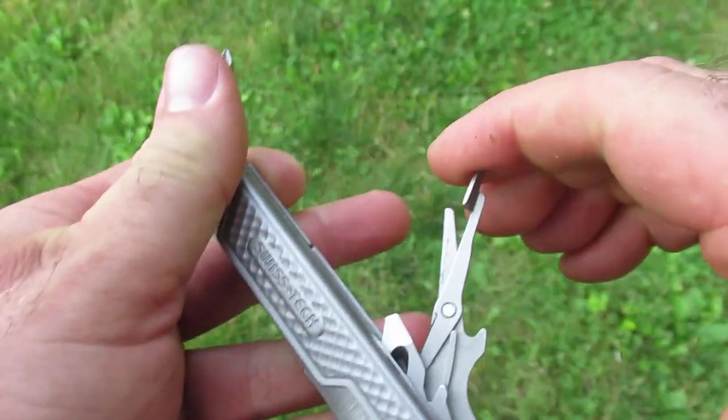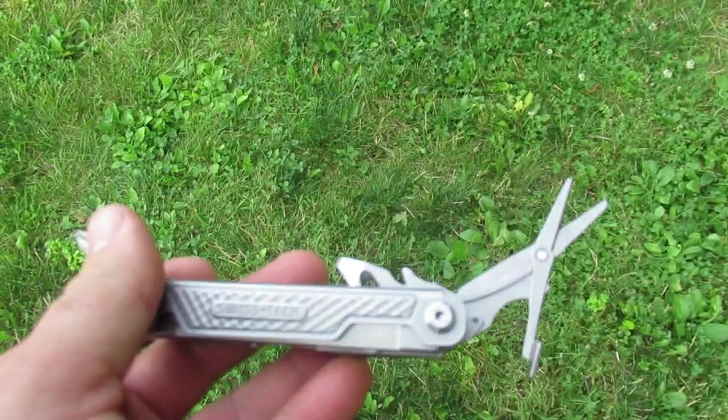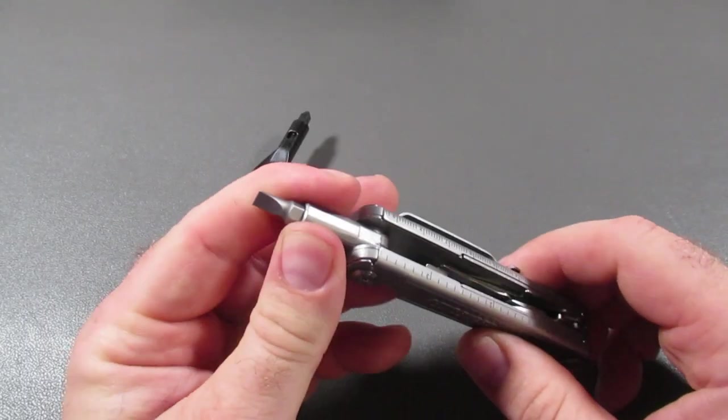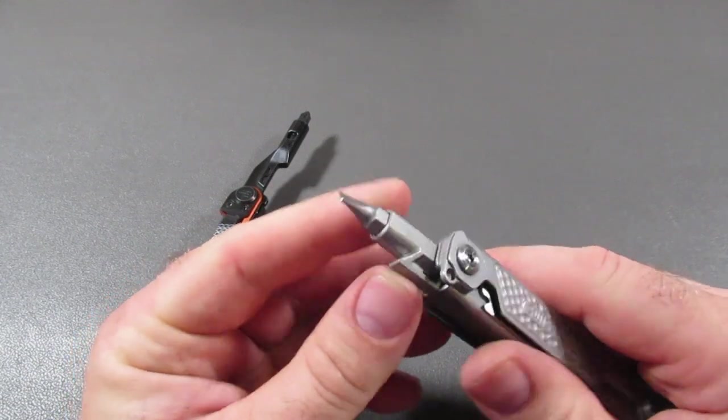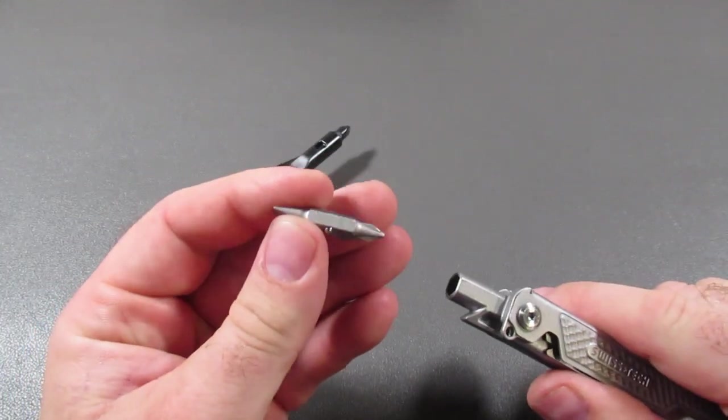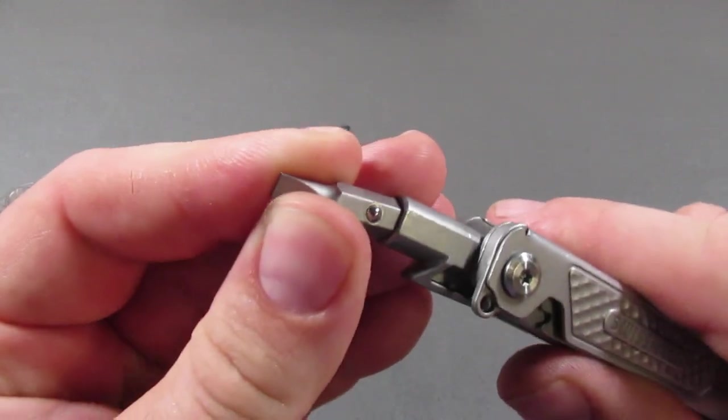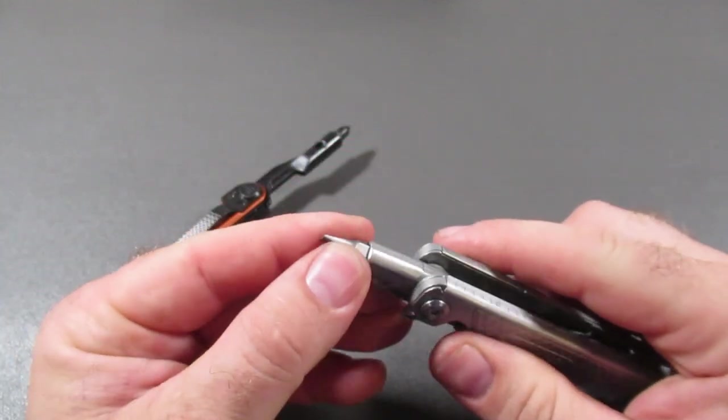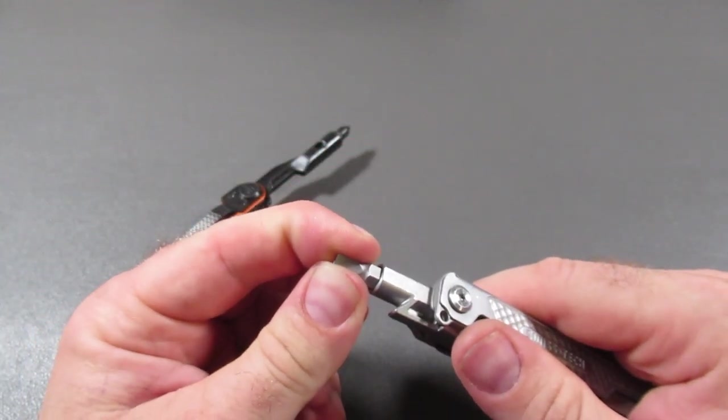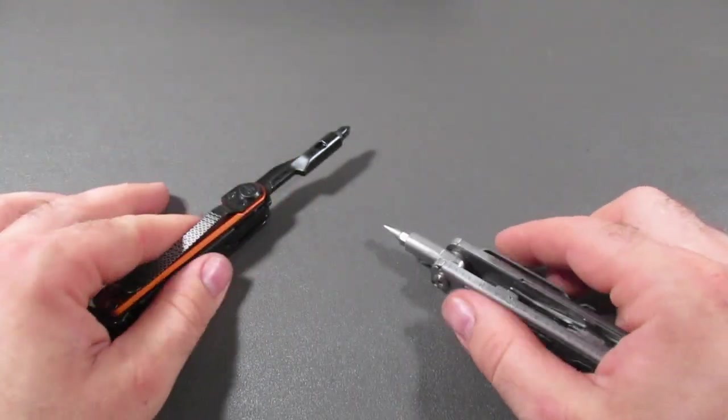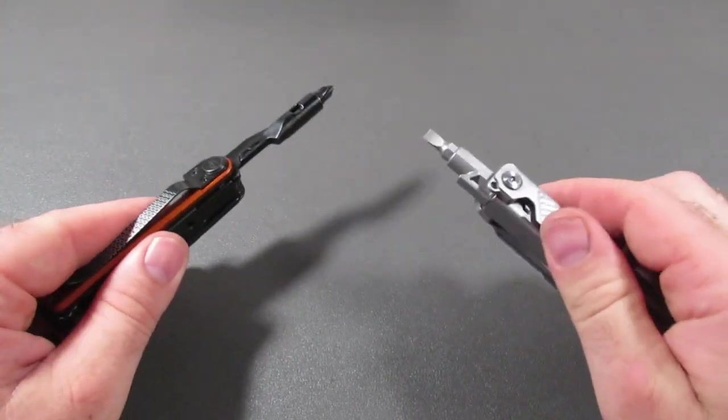So the Swiss Tech 11-in-1, one of the main selling points about it is that it has this screwdriver. So this is a quarter-inch double-sided screwdriver. You can see it has the ball detent right there. You can get replacement bits from Klein, from DeWalt, and some other off-brands as well. Fairly cheap on Amazon.